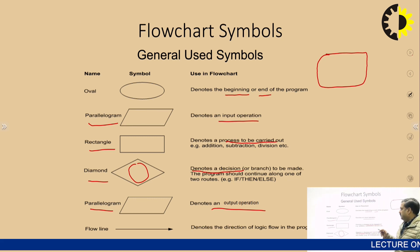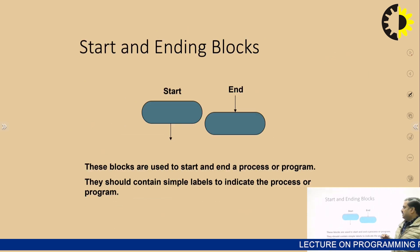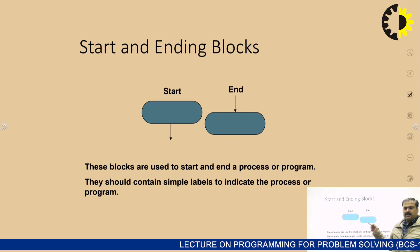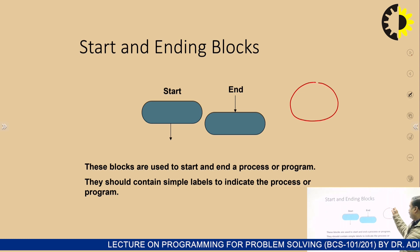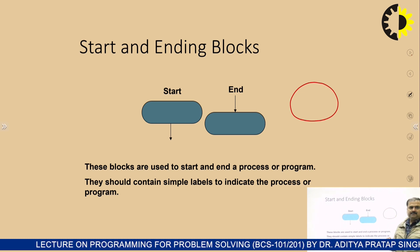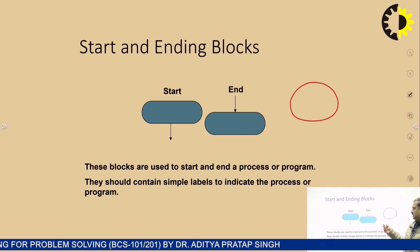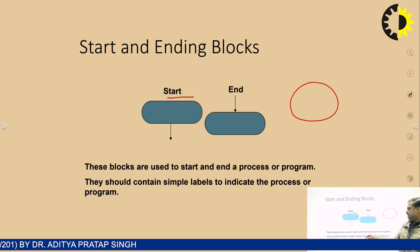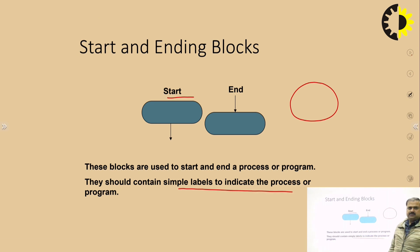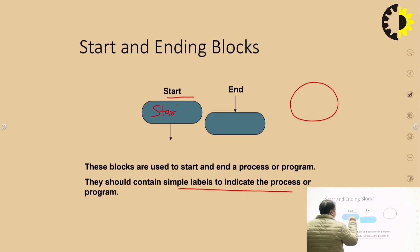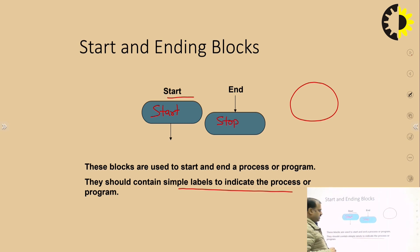A rounded rectangle or oval — both can be used for start and stop. These blocks are used to provide the beginning or end of the process, and they should contain simple labels. For example, we can write 'Start' in one and 'Stop' in another.